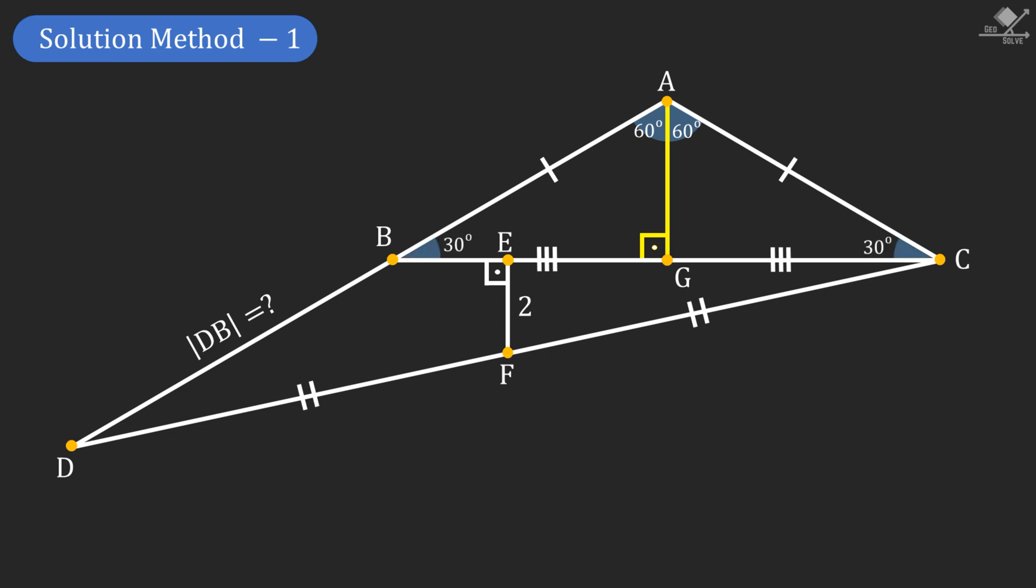Now let's connect point G and point F. Notice that both point G and point F are midpoints of line segments BC and DC. Therefore line segment DB and line segment FG must be parallel. And from here it can be seen that angle EGF is also 30 degrees.